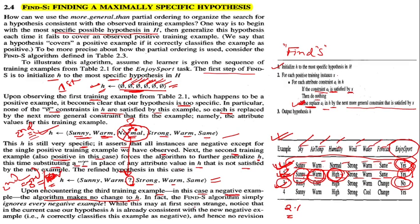This may at first seem strange, but notice that the current hypothesis H is already consistent with the new negative example. The third training example has 'rainy' and 'cold' instead of 'sunny' and 'warm', so it is naturally excluded. As long as H contains a hypothesis describing the true target concept and training data contains no errors, H never requires revision in response to a negative example.